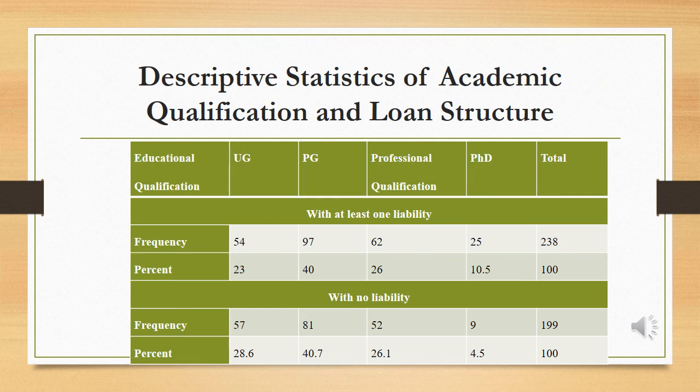The first objective of the study is to understand the loan profile of the respondents with respect to their academic educational qualification. The number of loans were evaluated as a function of educational qualification. It can be observed that 54.4% of the total respondents have reported having at least one liability. Among respondents with loans, post-graduates hold 40% of the total loans while those with PhDs have a minimum of 10.5%. It can be inferred that with an increase in educational qualification beyond post-graduation, loan holdings have decreased.